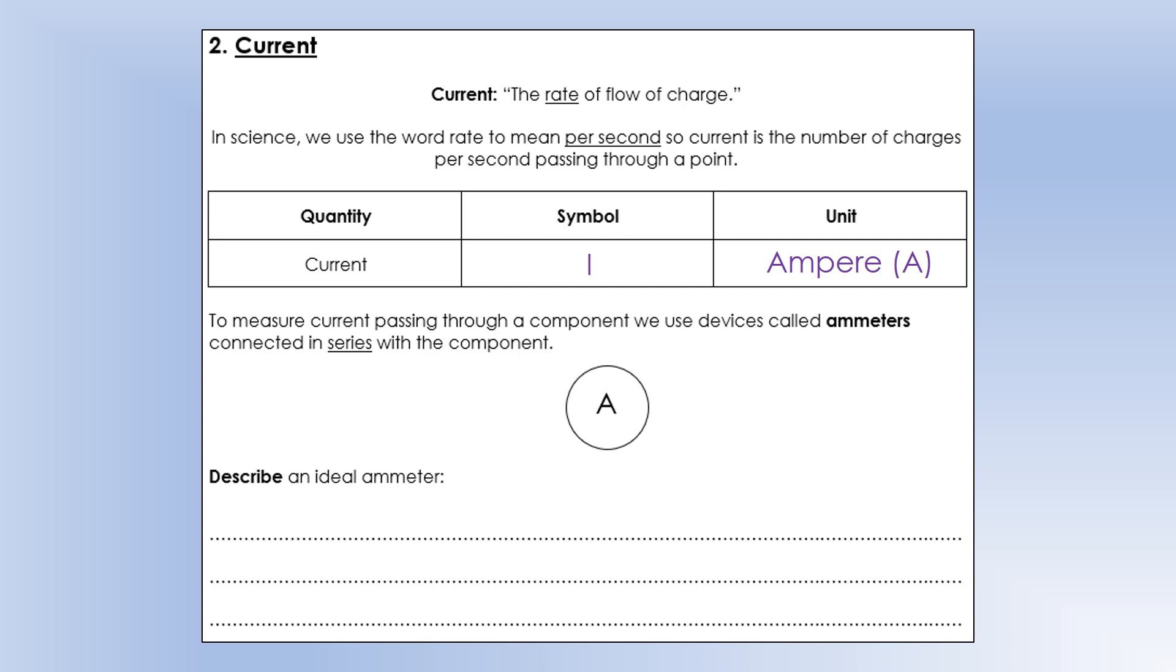So if we want to use an ammeter, which is what we use to measure current, we would need to connect our ammeter in series with the component. And we'll talk about precisely what series means later on. So in an ideal world, if we're using something as an ammeter, it should have zero resistance because we don't want the act of measuring the circuit to have an effect on the current. So ideally, our ammeter would have zero resistance. In the real world, they just have very, very small resistance.